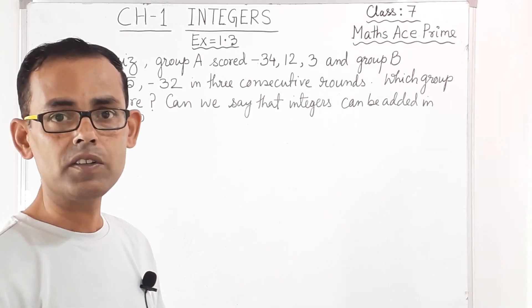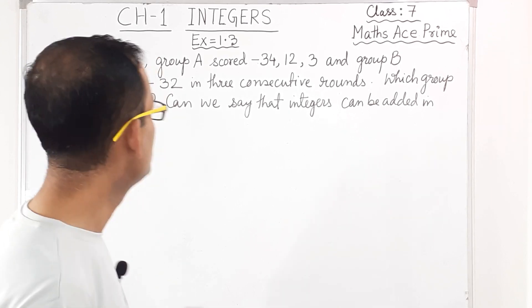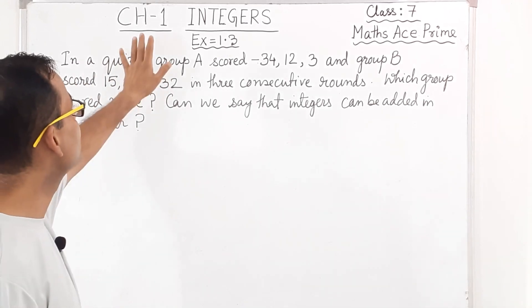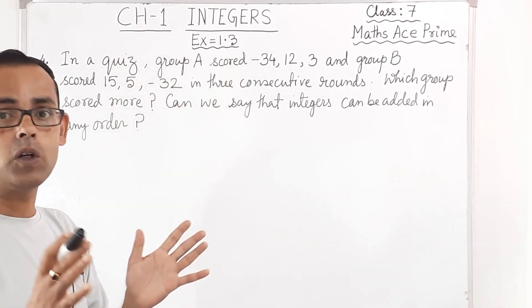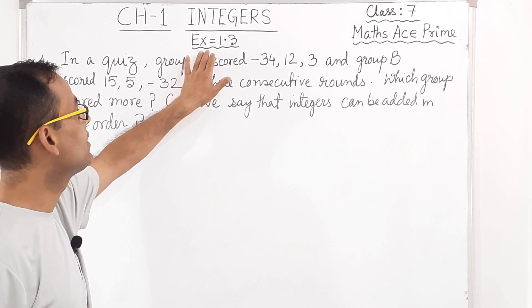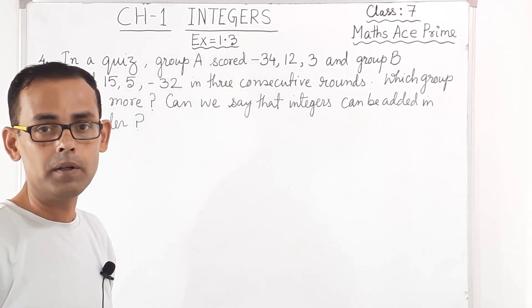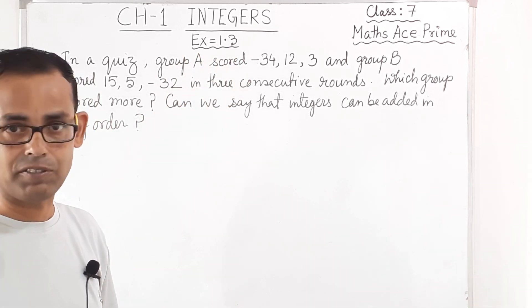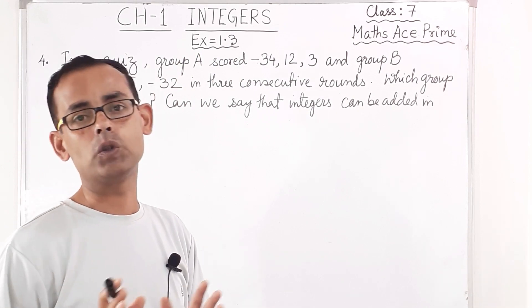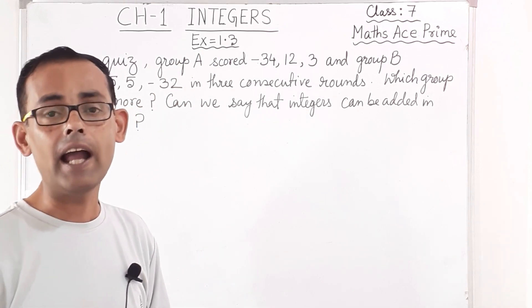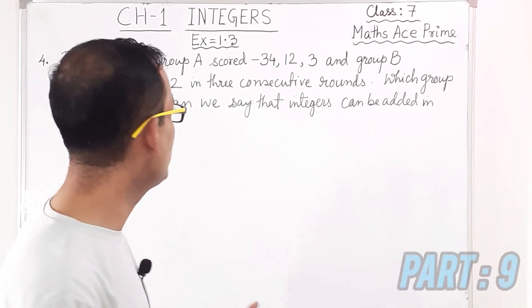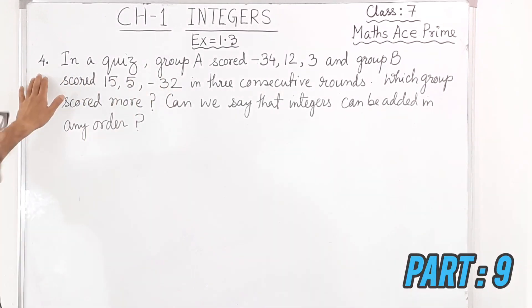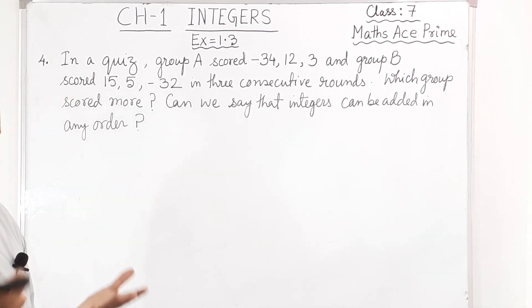Students of Class 7, today we are again going to continue with Chapter 1: Integers, and we are going to continue with Exercise 1.3 because a few sums are left. Question number 4 is left and question number 5 is left. Today's part is Part 9, and today we are going to finish this chapter. Now in question number 4, let us see what they have asked us.